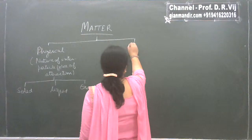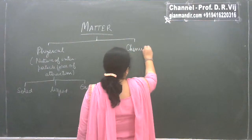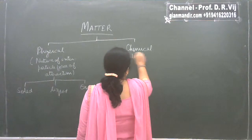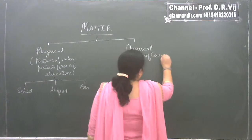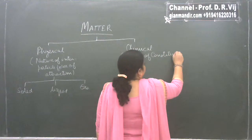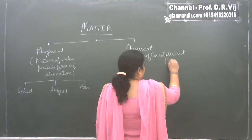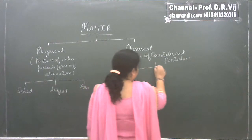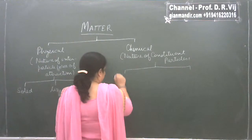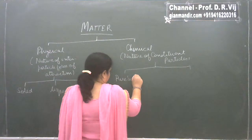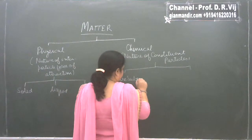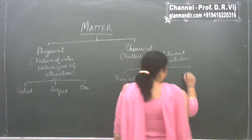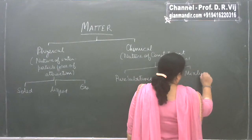On the other hand, the chemical classification of matter is based on the nature of constituent particles. On that basis, matter is classified into two categories: pure substance and mixture.